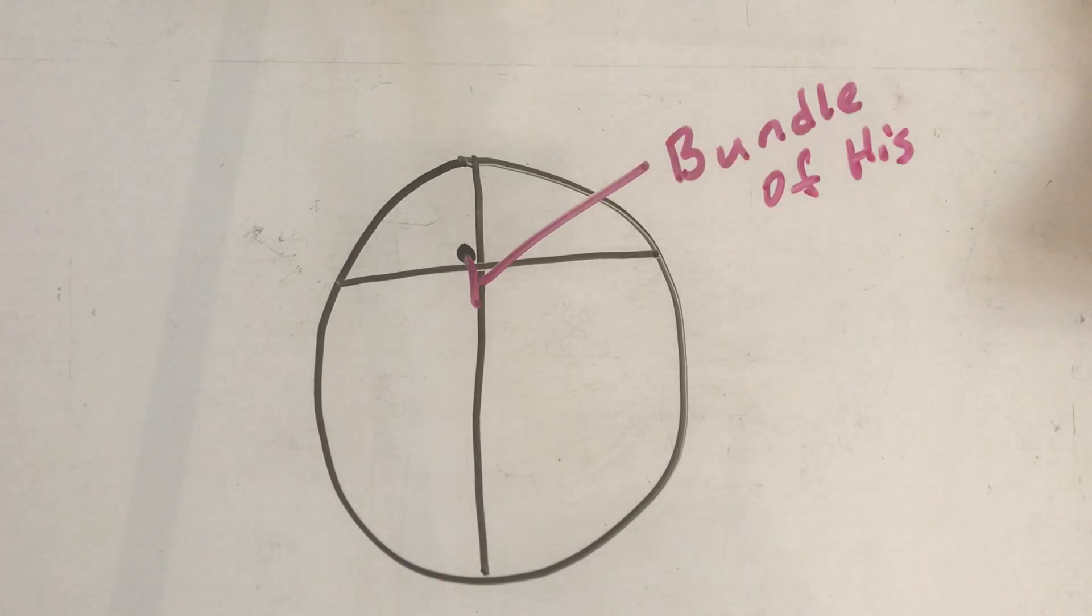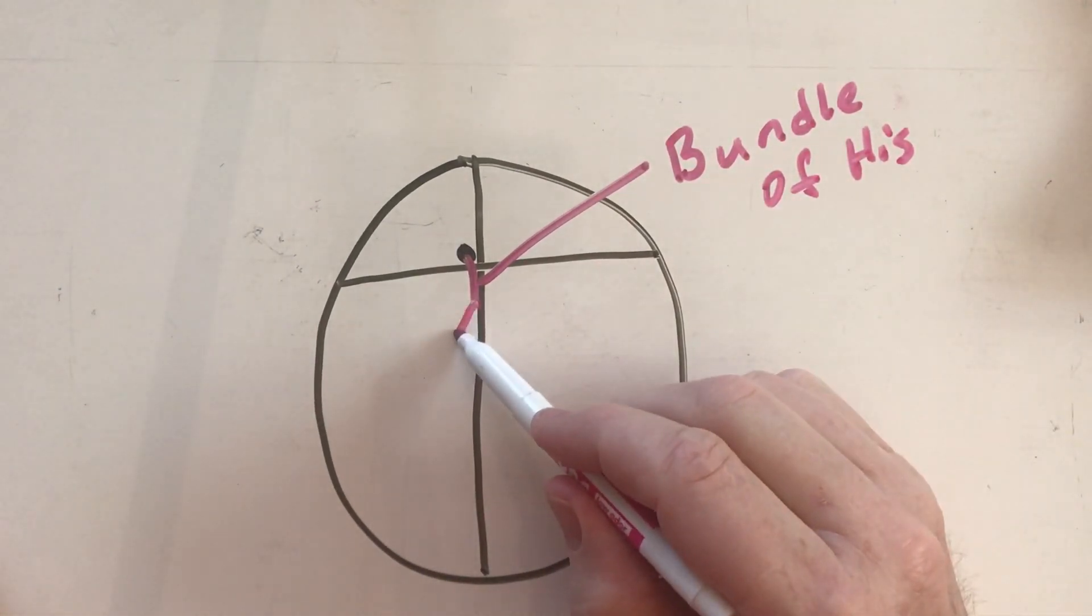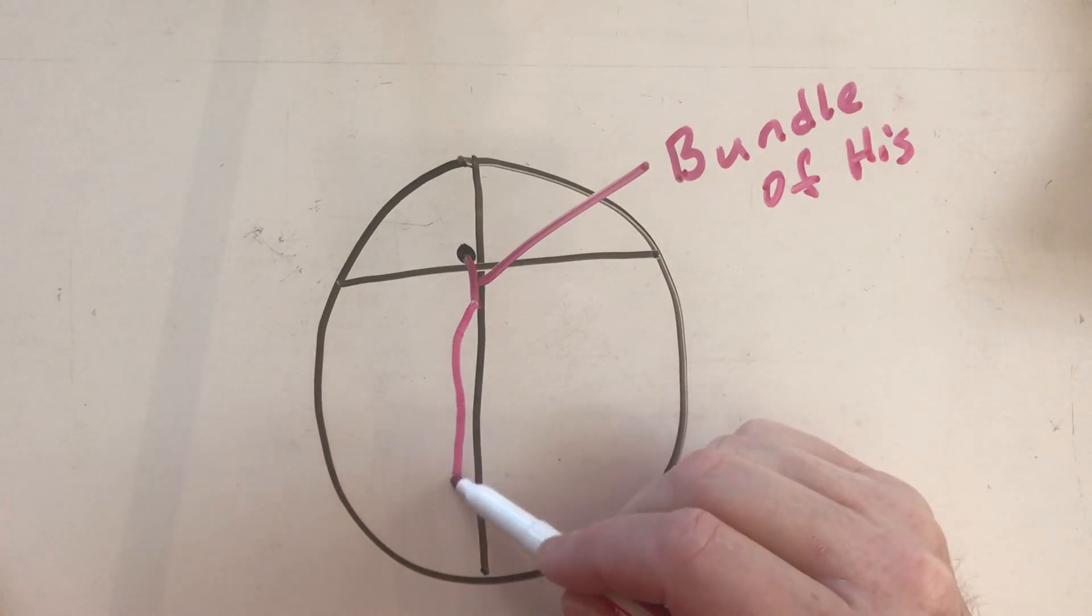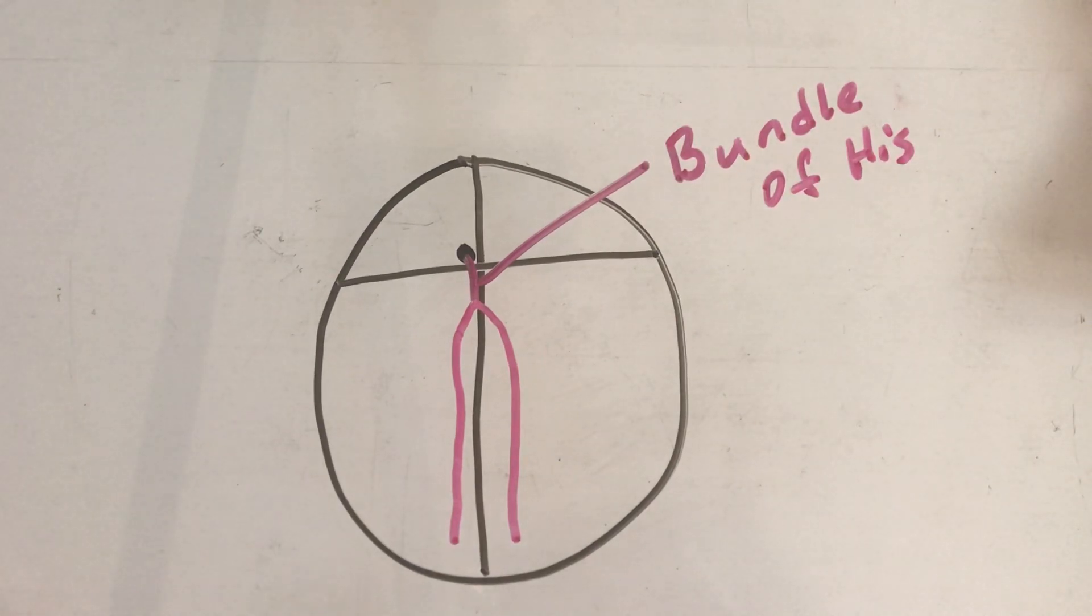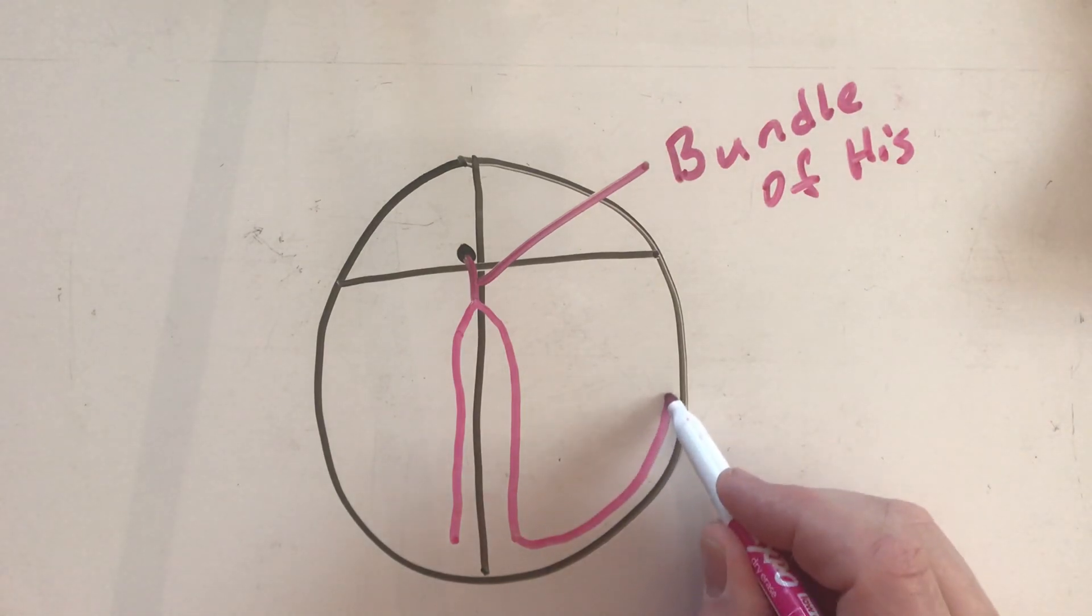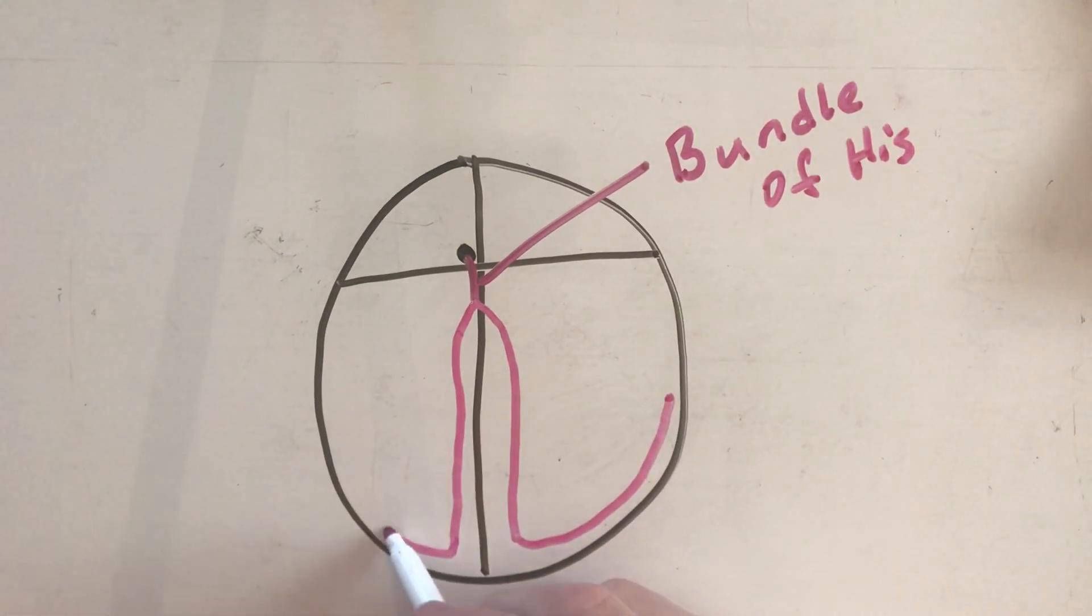Now the bundle of His is going to separate into the right bundle and into the left bundle. And then it's going to come down and it's going to be in the ventricle walls. It's going to be in the ventricle walls like that.